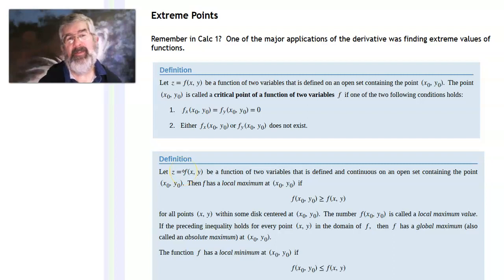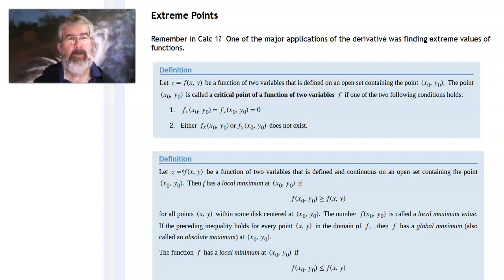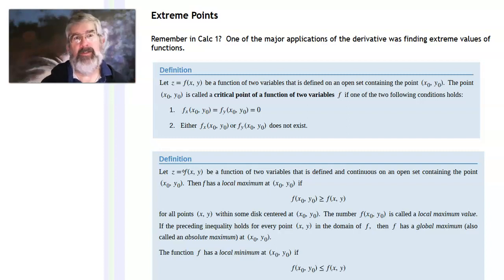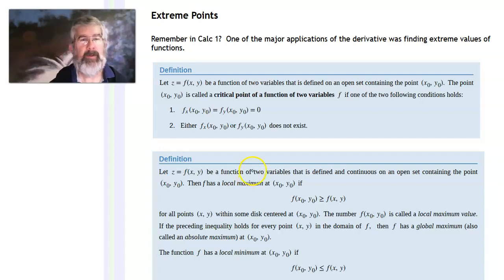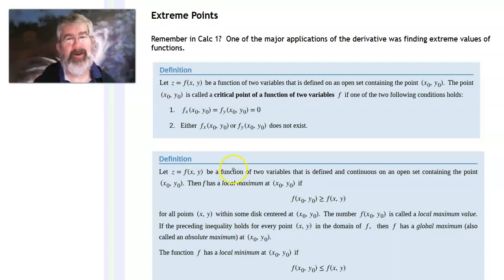It's the same thing with functions of more than one variable. There are going to be times where you've got a situation with a couple of variables but you want to get the most out of it — spend the least money or expend the least energy. Somehow there's an optimization process happening. So we need to take a look at how do we find extreme numbers, how do we find maxes and mins. And it's not surprisingly a lot like what it was in Calc 1.